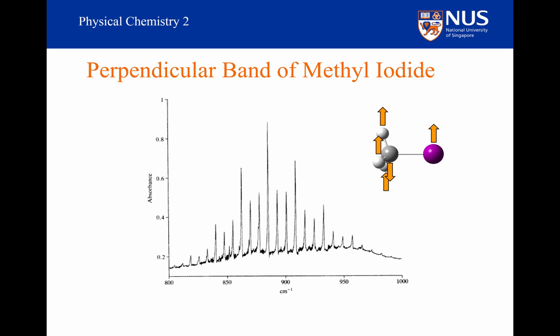This is the perpendicular band for methyl iodide. This time we have this kind of unresolved structure at the bottom. And then we have these intense peaks on top of that. What's going on?